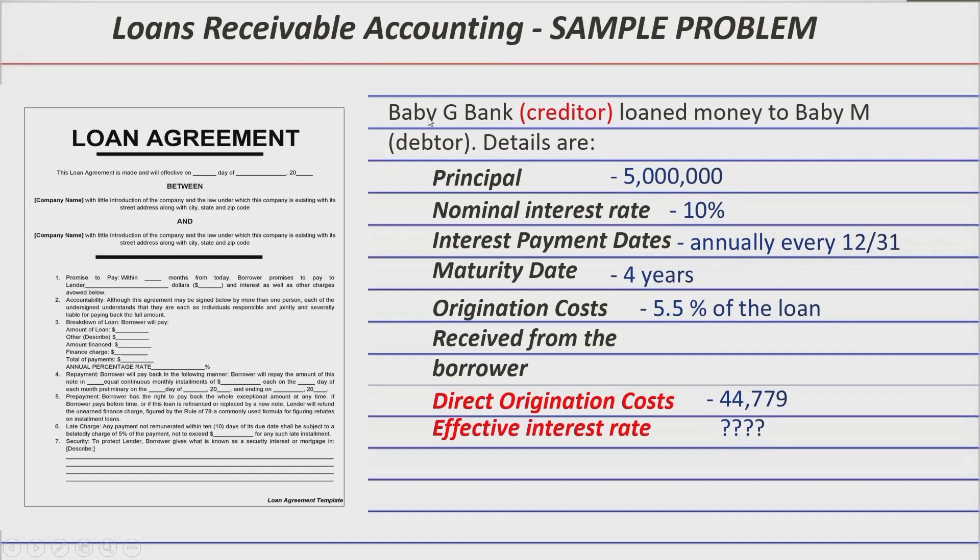BBG Bank, the creditor, loaned money to BBM, the debtor. So the details are: principal is 5 million, the nominal interest rate is 10%, payable annually every December 31. Furthermore, the maturity date or the maturity term is 4 years, and as per policy for example, BBG is to deduct in advance 5.5% origination cost from the proceeds to be released to the debtor.